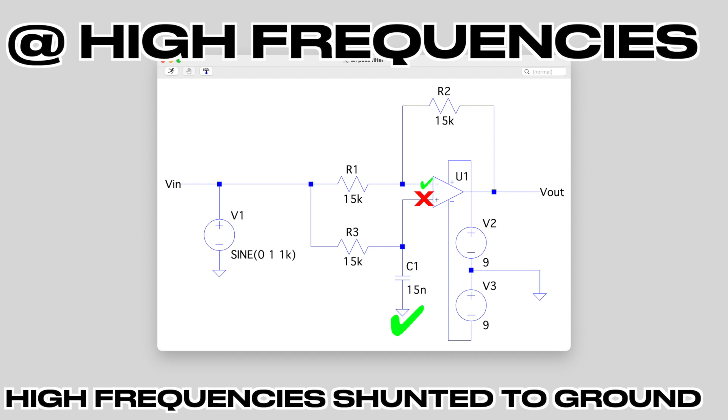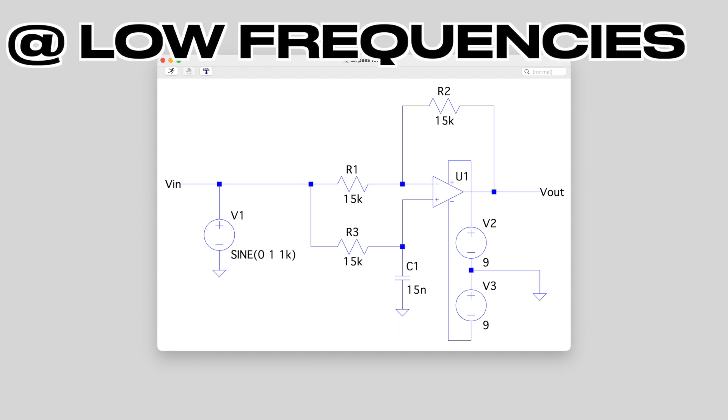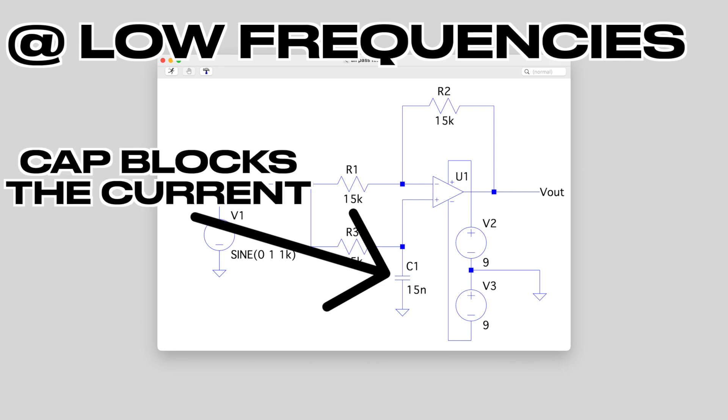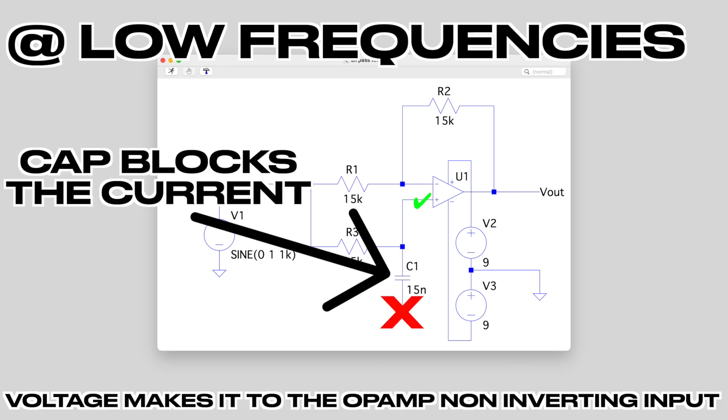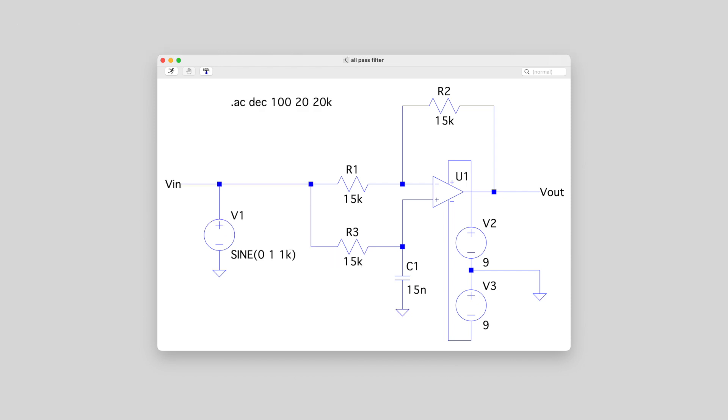Whereas at low frequencies, that capacitor will block the path to ground. So the voltage will make it to the non-inverting input of the op-amp. And the circuit behaves like a non-inverting op-amp buffer. Which just means it amplifies the input signal at unity gain and doesn't do anything to the sound at all.